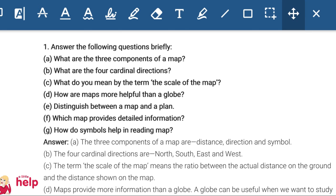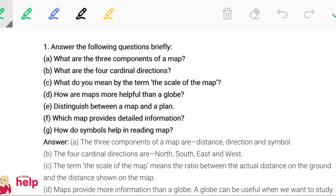What are the three components of a map? Students, I told you the three components of maps are distance, direction, and symbol. These are the three components. You can remember this as D-D-S: D for distance, D for direction, and symbol.